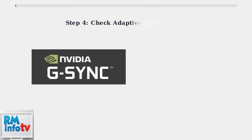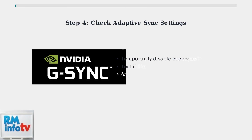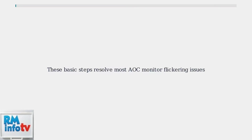Variable refresh rate technologies like FreeSync and G-Sync can cause flickering when frame rates fluctuate. Try disabling these features temporarily to identify if they're causing the issue. These four troubleshooting steps address the most common causes of AOC monitor flickering.